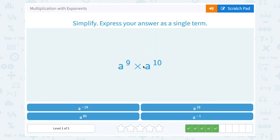a to the 9th times a to the 10th. Well, our rule is to add the exponents. So we would have a to the 9 plus 10 or 19th power.